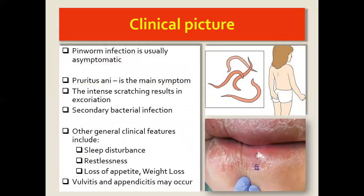Clinically, it will not be a big issue if the infestation is quite low or mild — normally it is asymptomatic. However, depending on the worm load, you might see pruritus ani and irritation of the perianal folds. Because of this constant irritation, you might have excoriation of the skin around the area, and the breaking of the skin secondary to excoriation can lead to secondary bacterial infection. Other features include sleep disturbance — since eggs are released at night — restlessness, and because it is an intestinal problem, weight loss and loss of appetite.